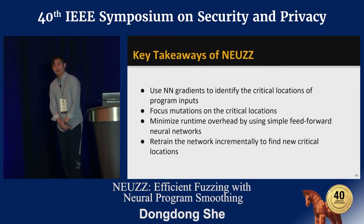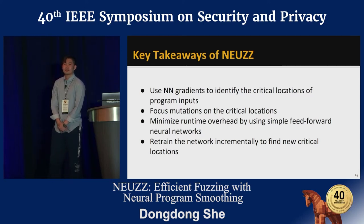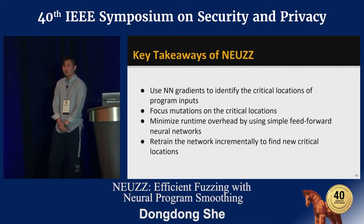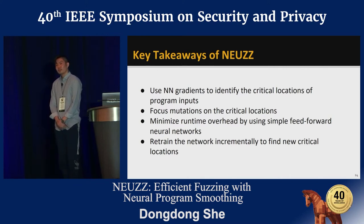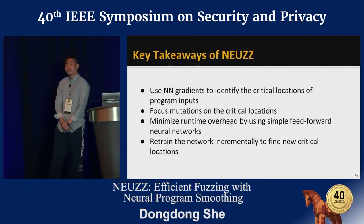Hector from UC Santa Barbara. Great talk. In your neural network, how do you limit the size of your output? There are so many branches. Do you have one neuron for each branch?